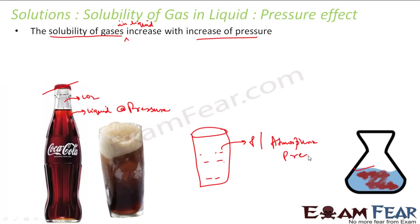When the bottle is open, the pressure becomes atmospheric. As the pressure reduces, the solubility of the gas decreases, and all this carbon dioxide comes out as bubbles. That is the reason why when you open a Coke bottle, you see carbon dioxide bubbles.